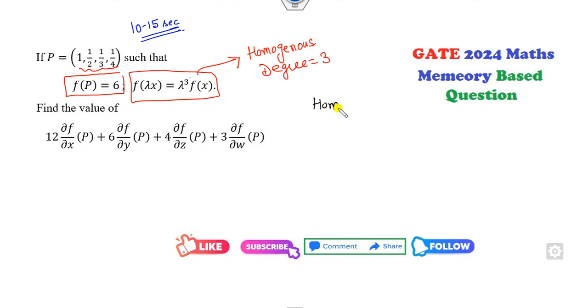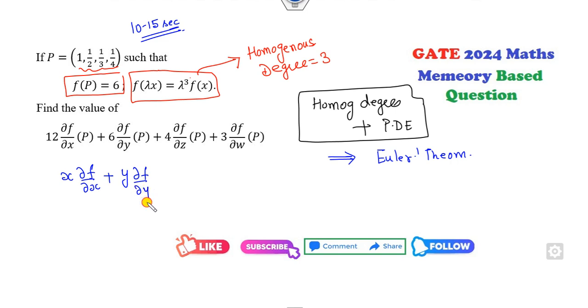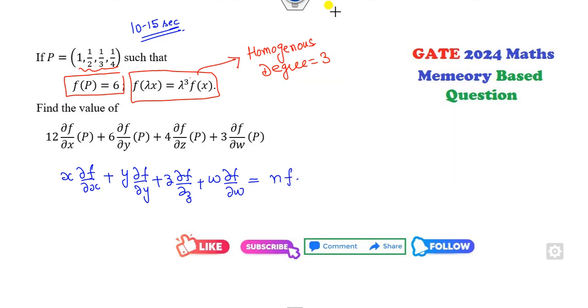Now, what concept comes in your mind when you talk about homogeneous degree and partial derivatives? When you talk about homogeneous degree and the partial derivative of first order, the only result that comes in mind is Euler's theorem. What is Euler's theorem? That's x del f upon del x plus y del f upon del y plus z del f upon del z plus w del f upon del w equals n into f. This is the statement of the Euler equation.